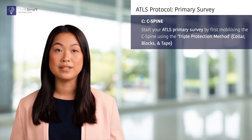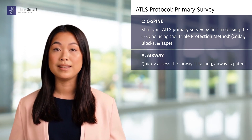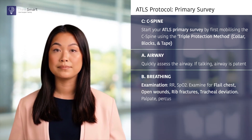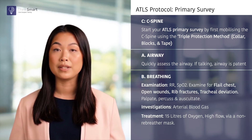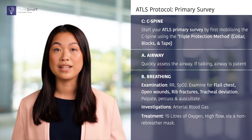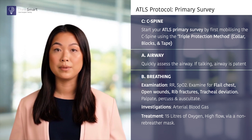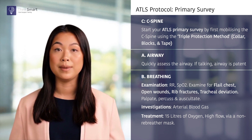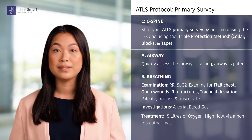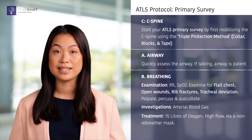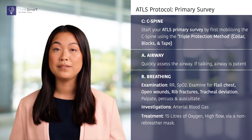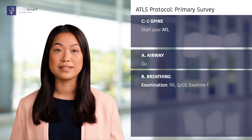I would then assess the patient's airway. If they are able to vocalize clearly, the airway is patent and I would move on to breathing. I would check the patient's respiratory rate and saturations before closely examining for chest wall deformity, open wounds, rib fractures, or tracheal deviation. After palpating, percussing, and auscultating the chest, I would request an arterial blood gas before starting this patient on 15 liters of high-flow oxygen via a non-rebreather mask.